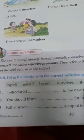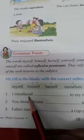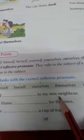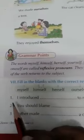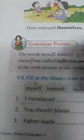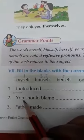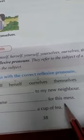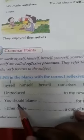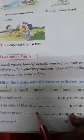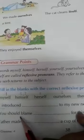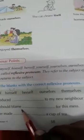They are having some clue words. First one: I introduced blank to my new neighbor. The subject is 'I', so the reflexive pronoun is 'myself'. Second one: you should blame blank for this mess. Here it is the plural form, so you write 'yourselves'.